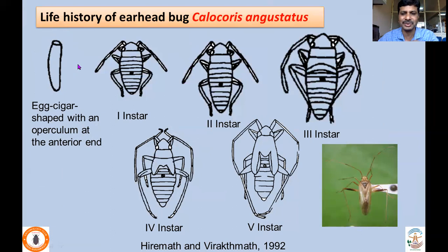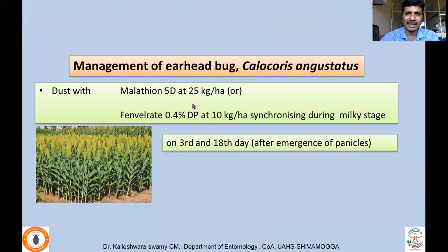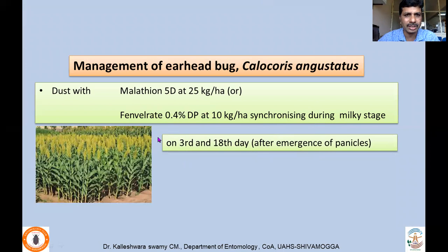The egg of the earhead bug is cigar-shaped, open at the anterior end, and inserted into leaf tissues. It undergoes five instars; wing buds become very clear in the fifth instar. Completing five nymphal instars takes about 10 to 17 days. The adult is yellowish-green, measures about 5 to 8 mm, and lays about 57 to 267 eggs. For management, malathion dusting at 25 kg per hectare or fenvalerate 4% DP at 10 kg per hectare is applied synchronizing with the milky stage, repeated on the third day after panicle emergence if needed.